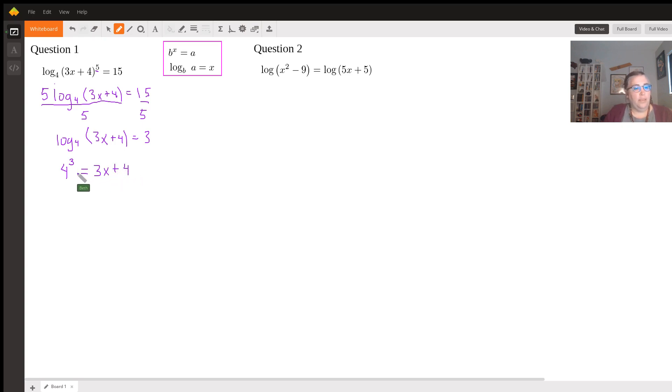Now we can evaluate this. 4 to the third equals 64. You would need to calculate that on your own. This is now a relatively simple algebraic equation to solve. We subtract 4 from both sides and get 60 equals 3x. Divide both sides by 3, we get x equals 20, which is what we are trying to find.